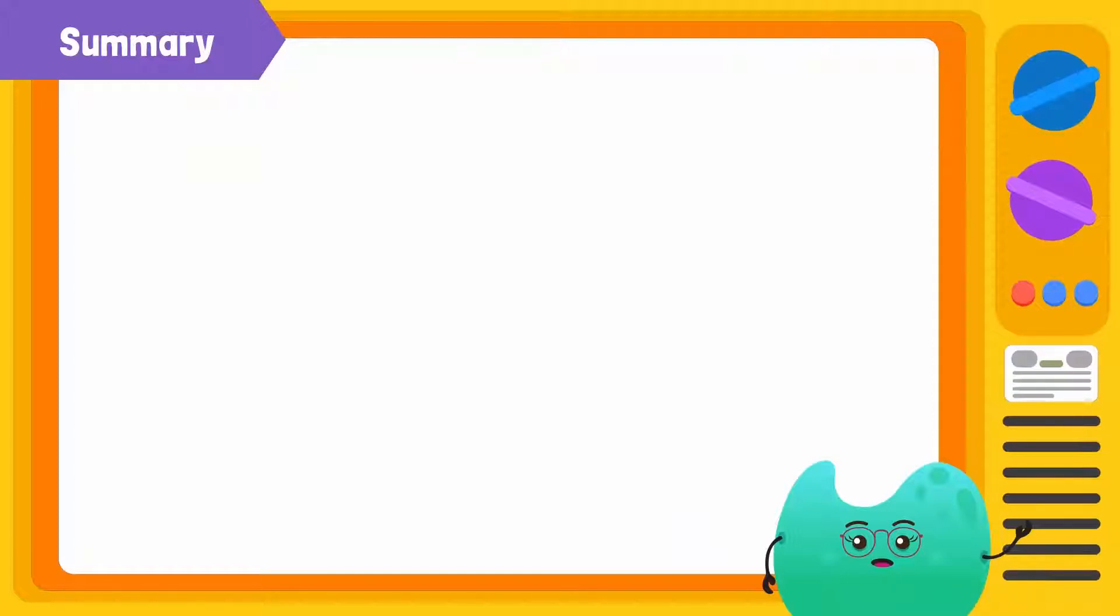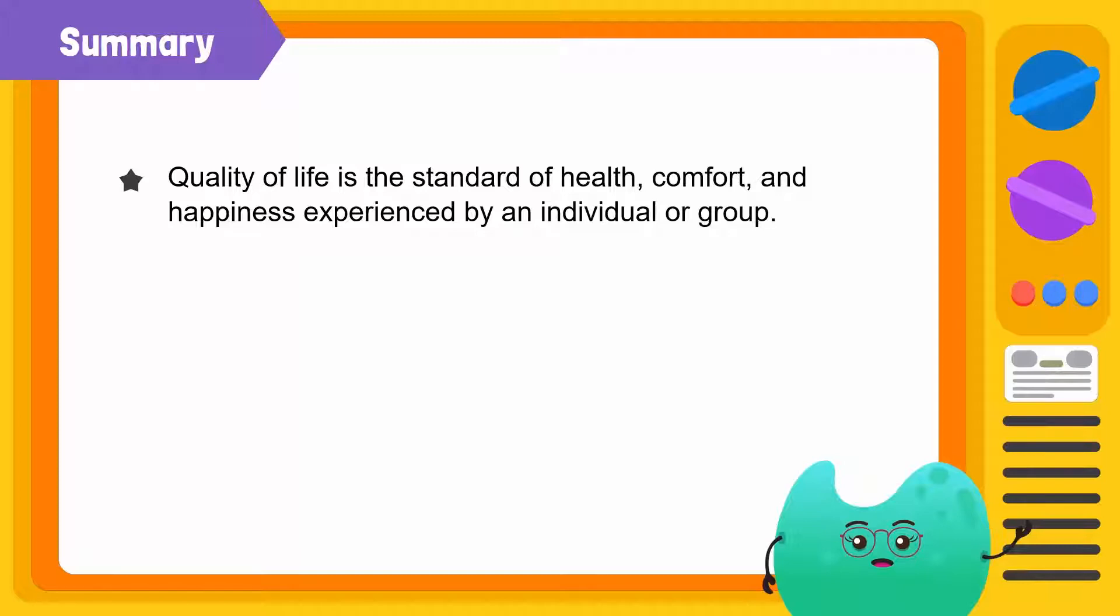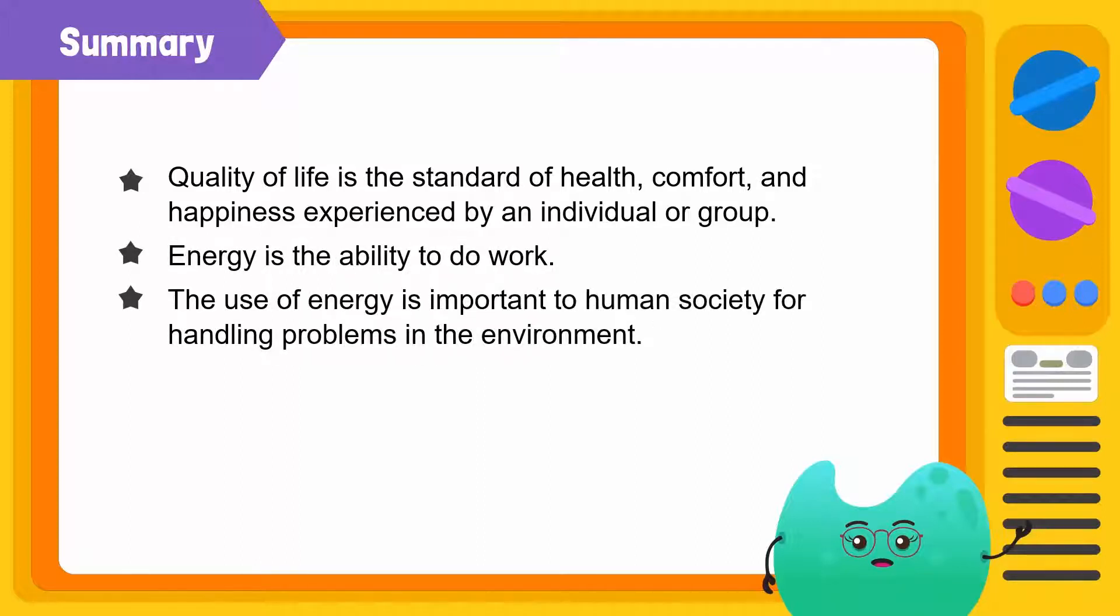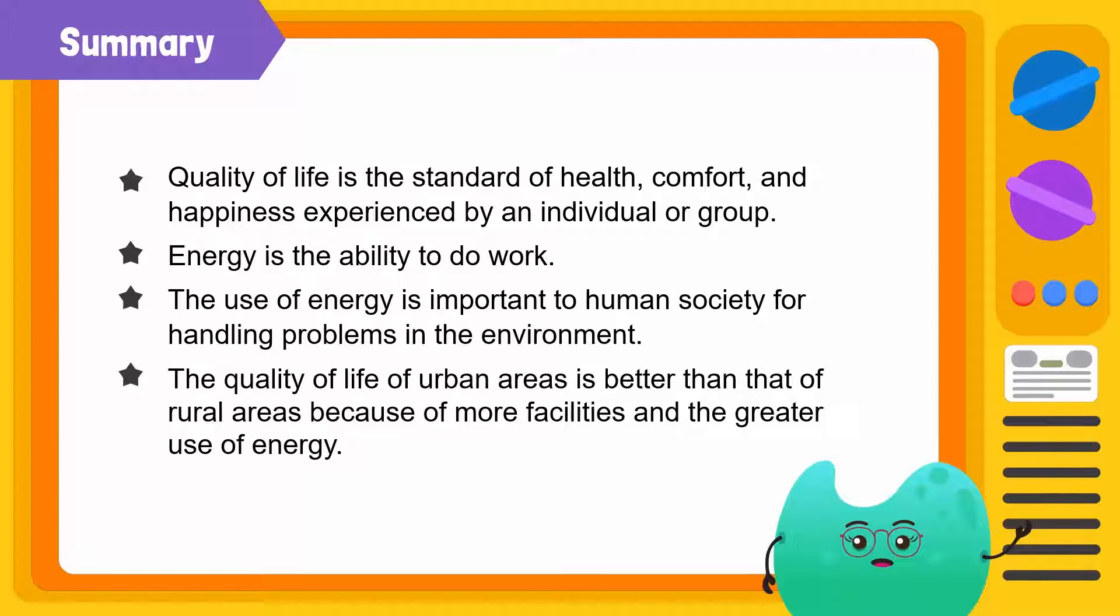Let's summarize what we have learned today. Quality of life is the standard of health, comfort and happiness experienced by an individual or group. Energy is the ability to do work. The use of energy is important to human society for handling problems in the environment. The quality of life in urban areas is better than that of rural areas because of more facilities and greater use of energy.